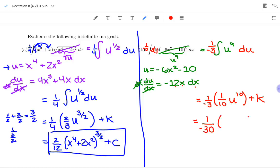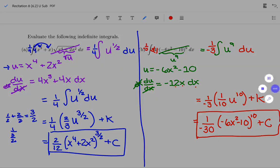And then I have my u to the 10th plus c. So I'm going to sub back in for that u. u is negative 6x squared minus 10. And there is my second product rule, u sub. And I'm going to ask you, and see you later.